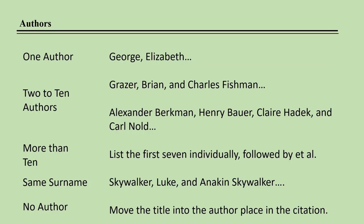In a Chicago style footnote, the author's name is written as it is said, first name first. However, the bibliography is organized alphabetically by author's last name. So in the bibliographic citation, the author's last name is listed first, followed by a comma, and then the first name, and a period. Periods separate pieces of information in the bibliographic citations, whereas commas separate pieces of information in the footnote citation. Just another difference between the two.